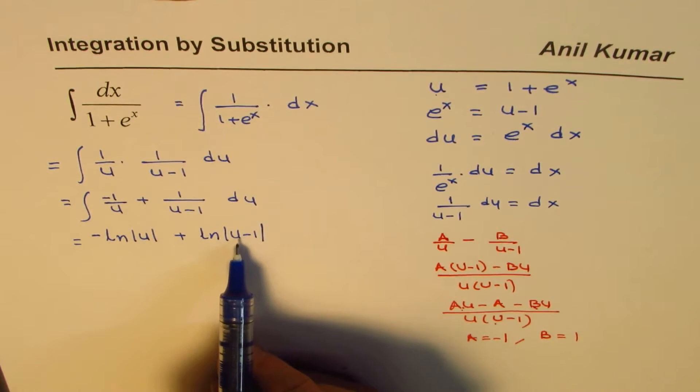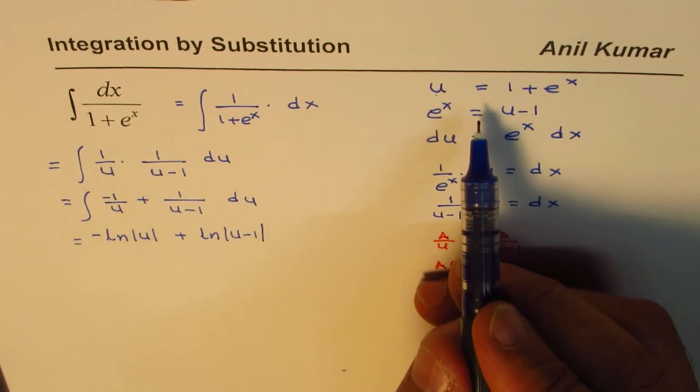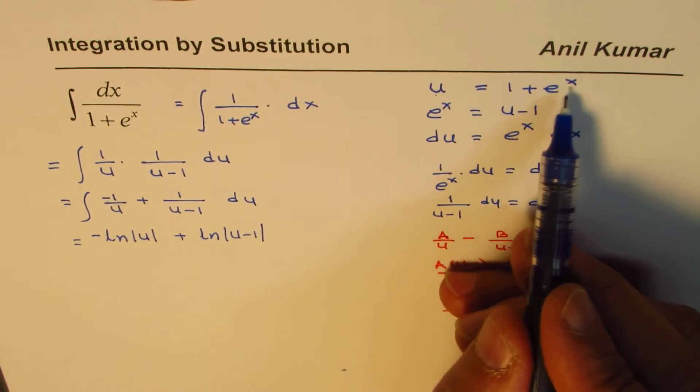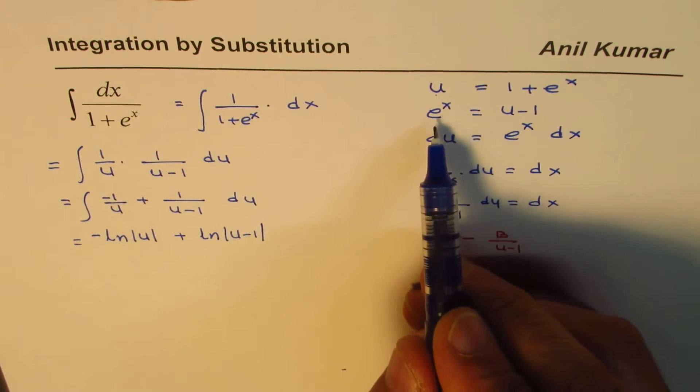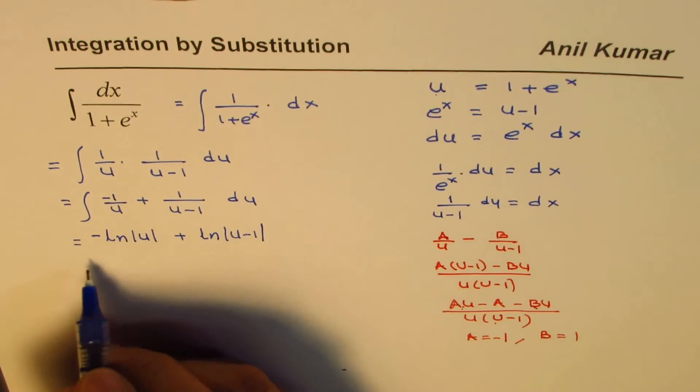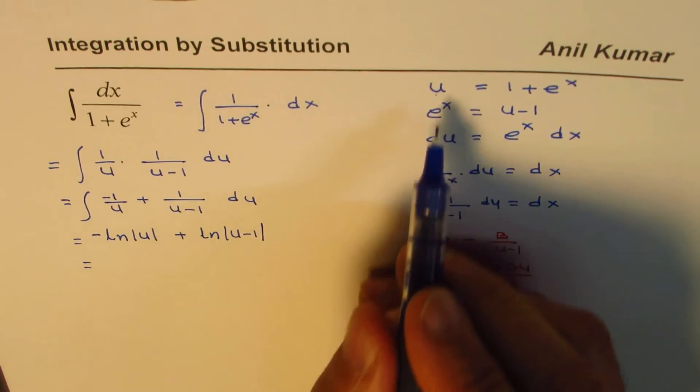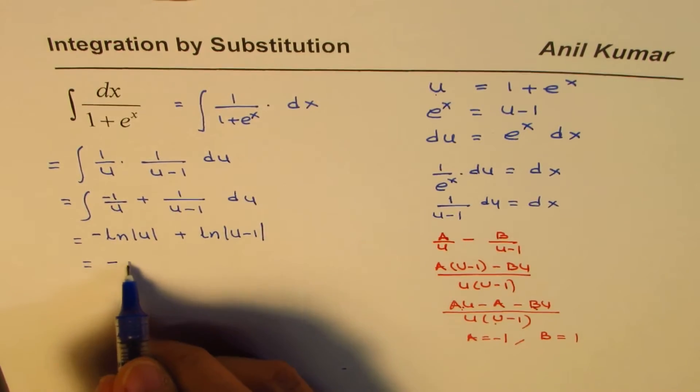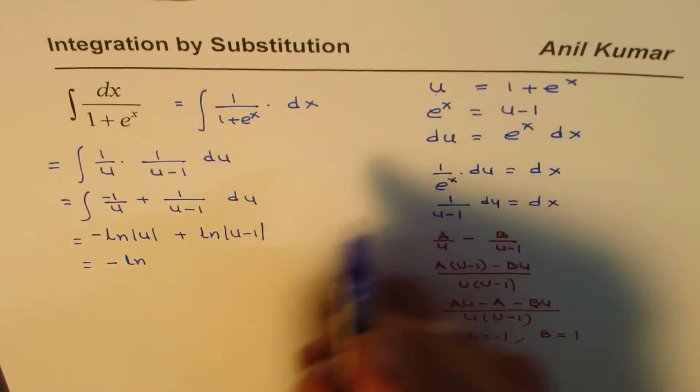So that is what you can get. Now, u is 1 plus e to the power of x, and this is e to the power of x.